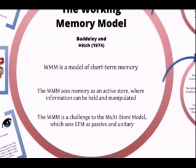This tutorial focuses on the working memory model by Baddeley and Hitch, specifically the 1974 original version of the model. The working memory model focuses on short-term memory and sees memory as an active store where information can be held and manipulated. It is a challenge to the earlier work on the multi-store model by Atkinson and Shiffrin, which sees short-term memory as passive and unitary.